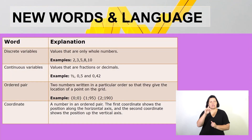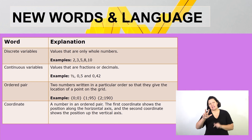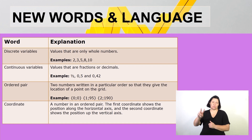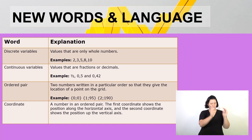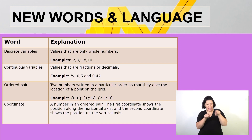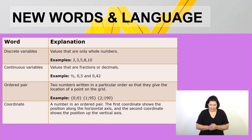The new terms we are going to learn in this section are: discrete variables, which are values that are only whole numbers — for example 2, 3, 5, 8, and 10. Continuous variables are values that include fractions or decimals, such as 1/2, 0.5, and 0.42. Ordered pairs are two numbers written in a particular order that give the location of a point on a grid — for example (0, 0), (1, 95), (2, 190). Coordinates refer to a number in an ordered pair: the first coordinate shows the position along the horizontal axis and the second shows the position up the vertical axis.